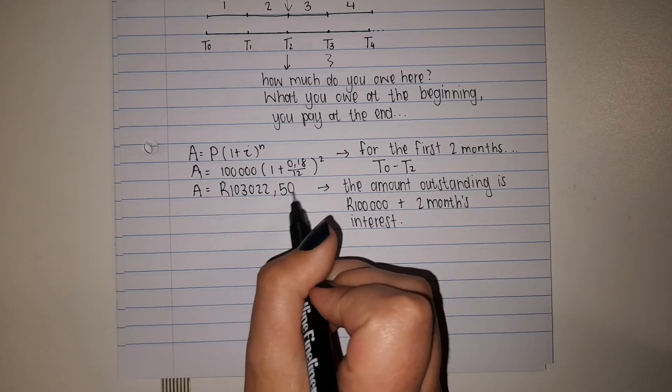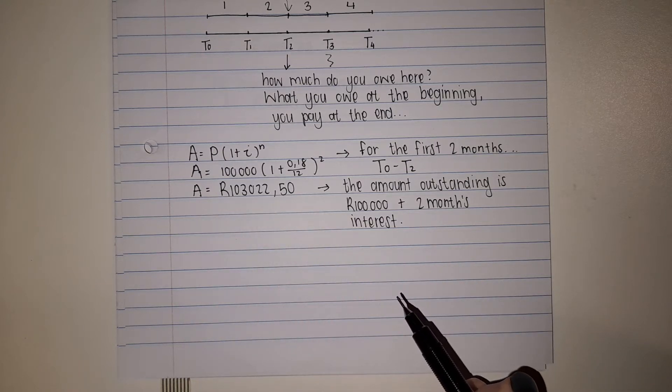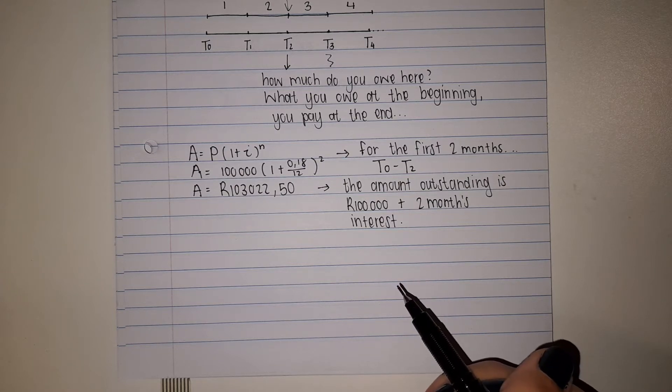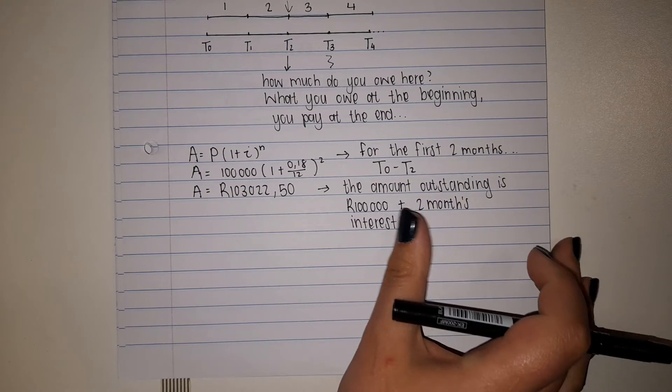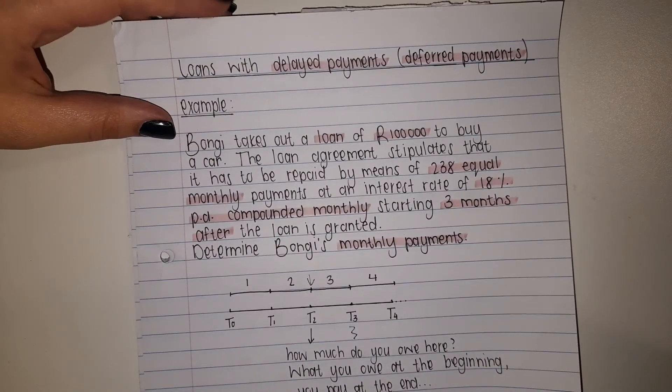We end up with this amount over here. This is the amount outstanding: 100,000 plus the two months interest. That is very important that you keep that in mind.